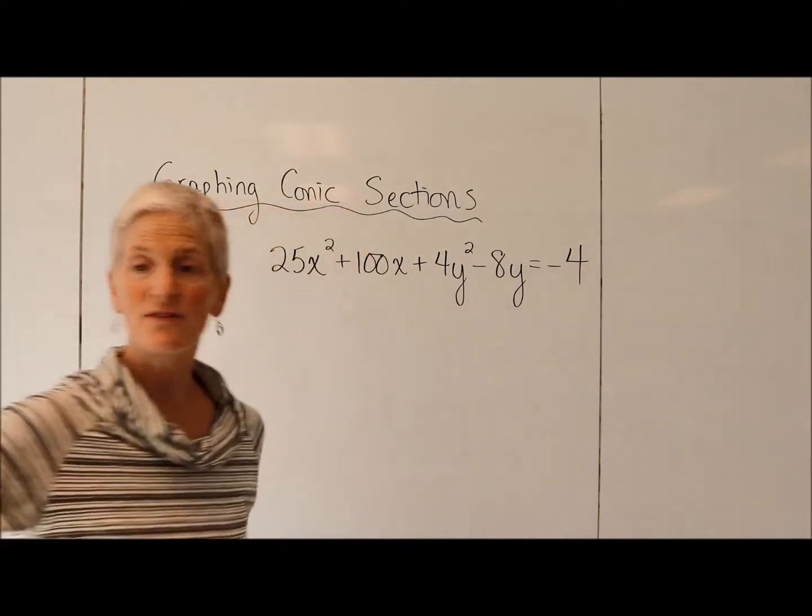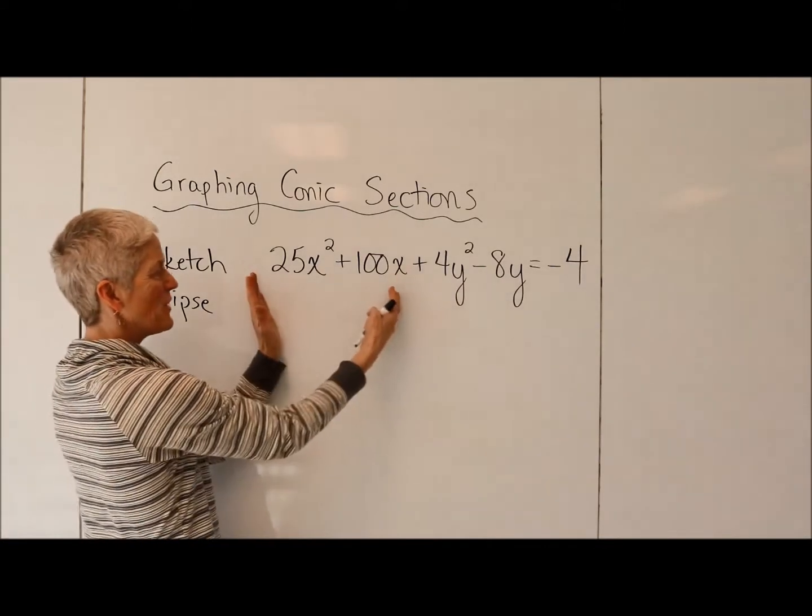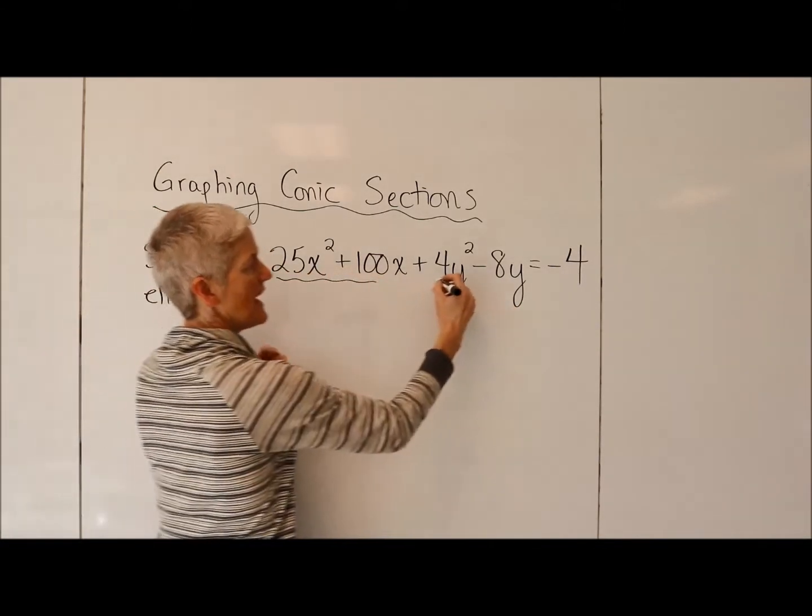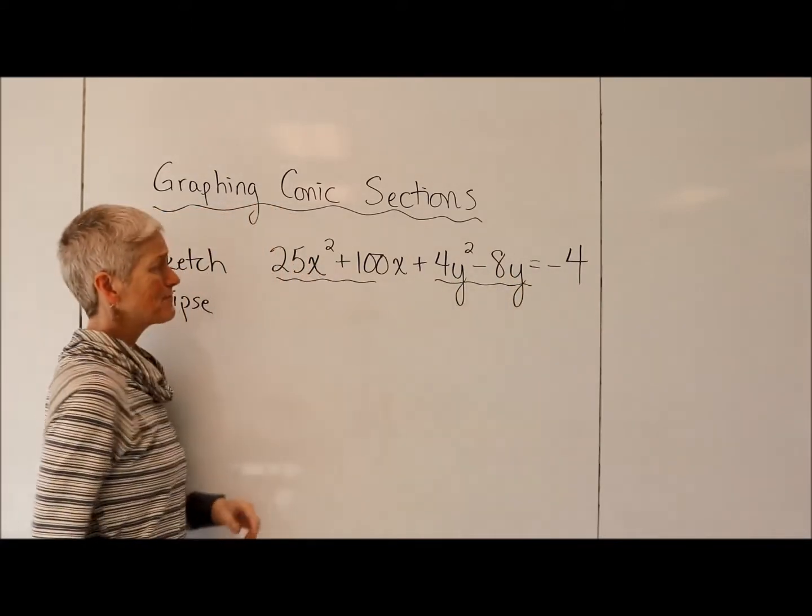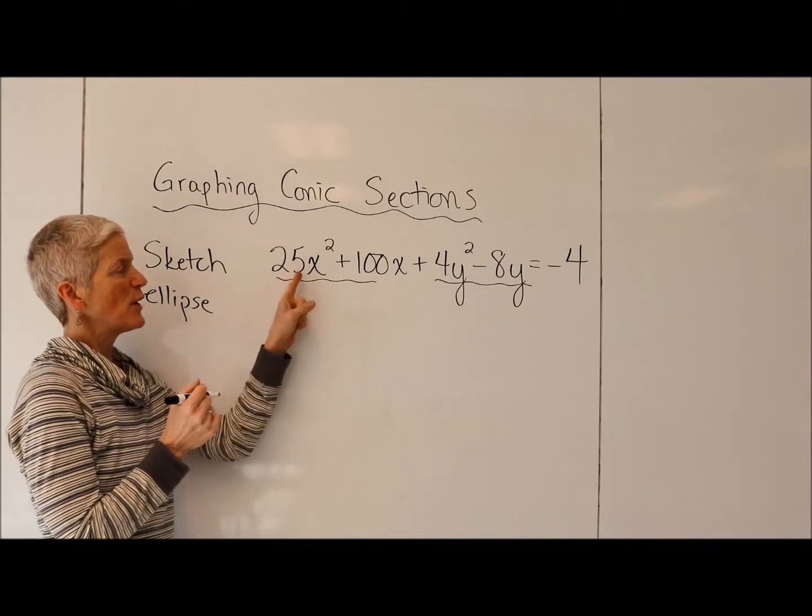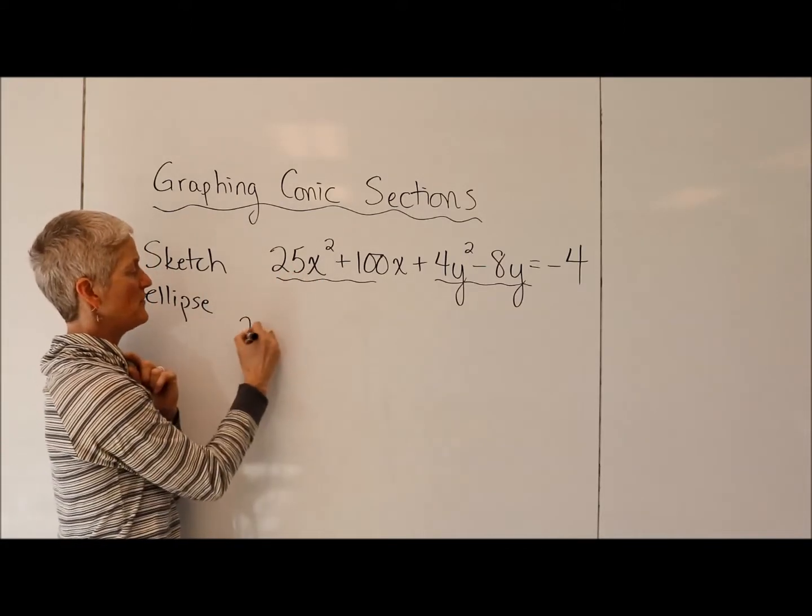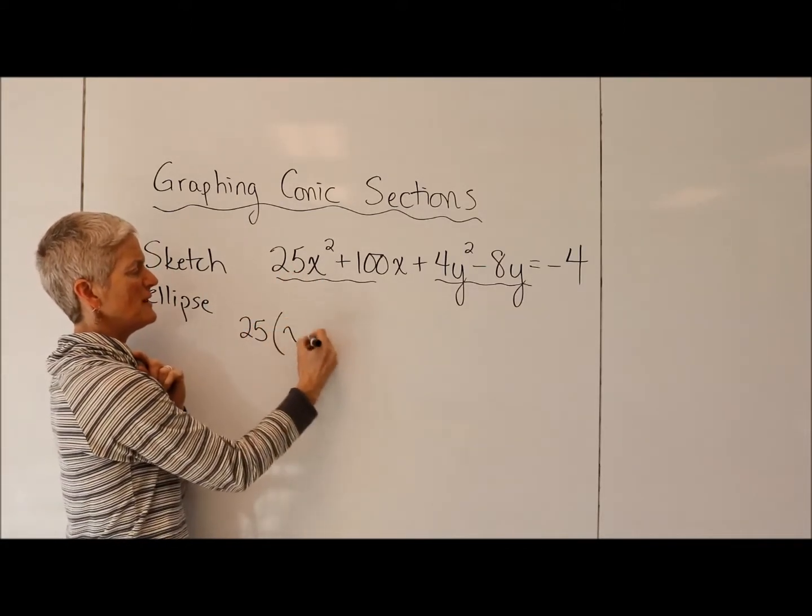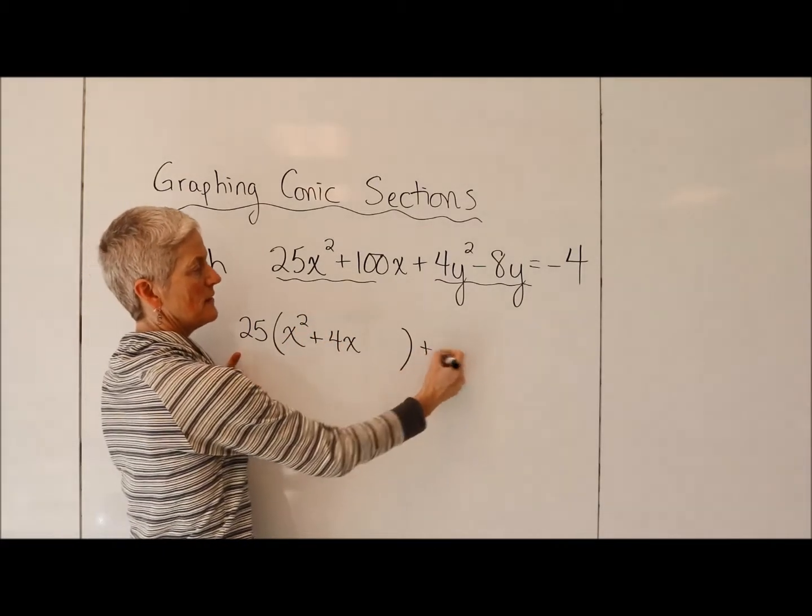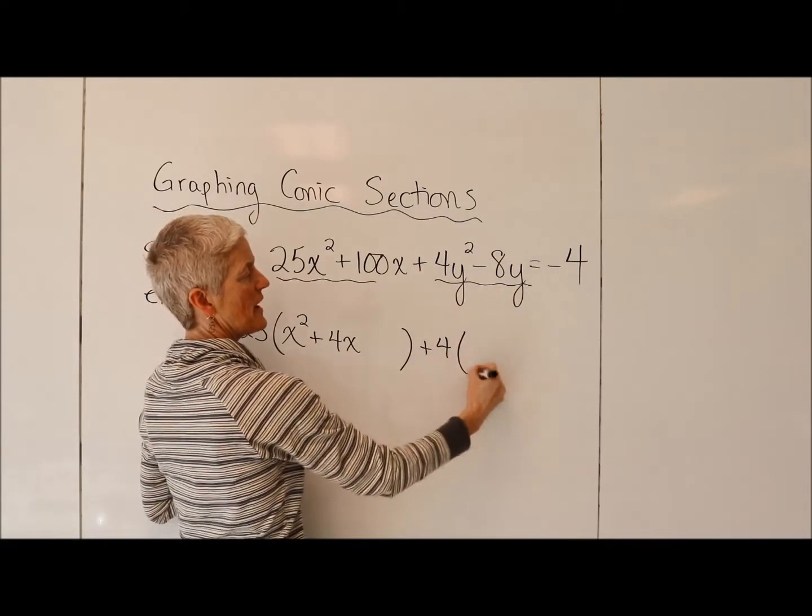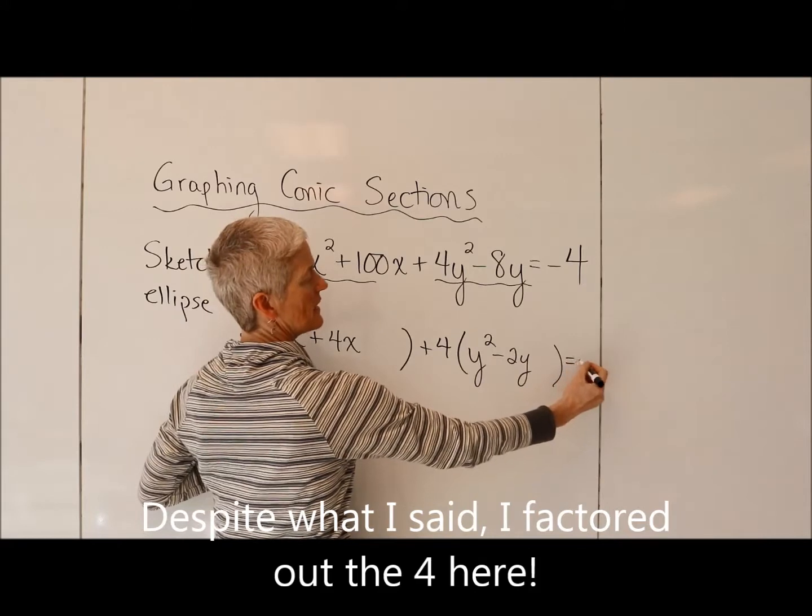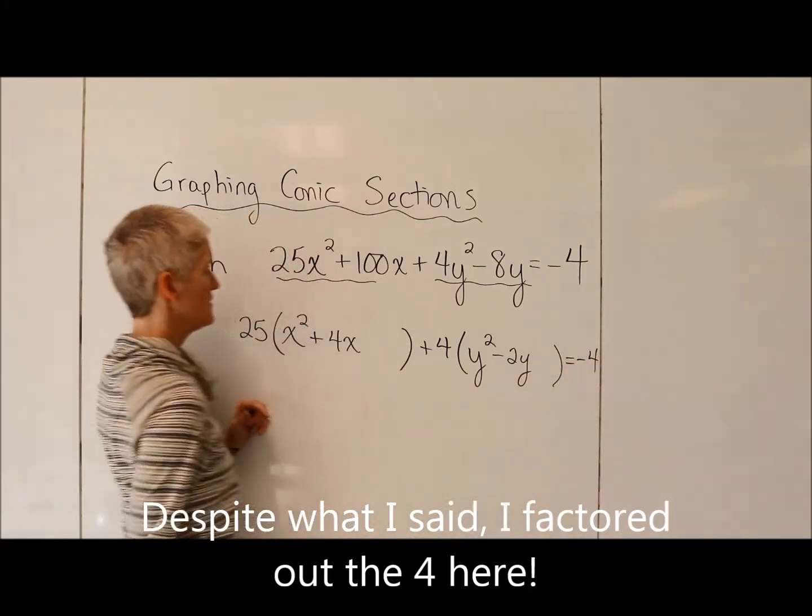All right, to complete the square, I want to first gather up my x's, gather up my y's. Oh, they're kind of already gathered for me. That's nice. If you recall, completing the square is pretty tricky unless I have a coefficient of one in front of that square term. So I'm going to factor out the 25. I'm going to leave a little room there. Here I'm going to factor out that 4. Let's leave a little room, and that little negative 4 is hanging out on its own.